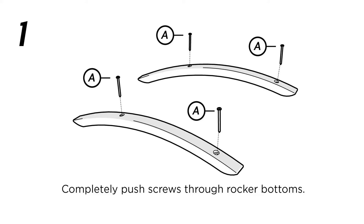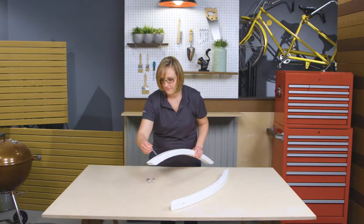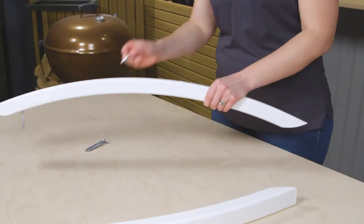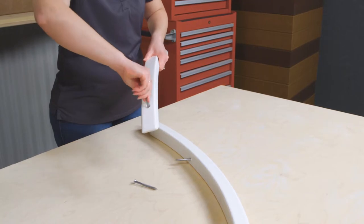Begin by threading two 3-inch screws in the pre-drilled holes in each of the rocker bottoms. With the screws threaded all the way through, you'll be able to easily align the ends of the screws with the pre-drilled holes in the bottom of each leg of the side frame.